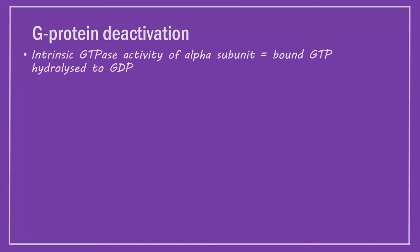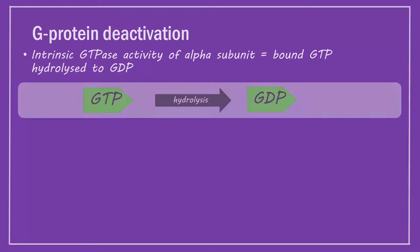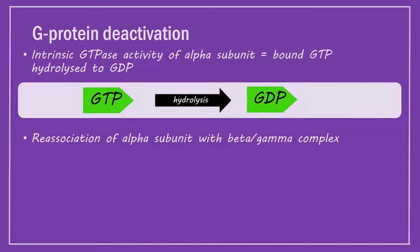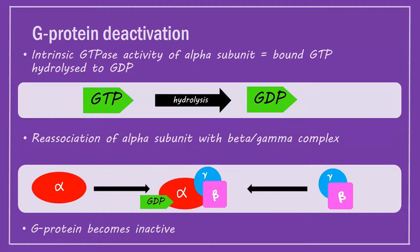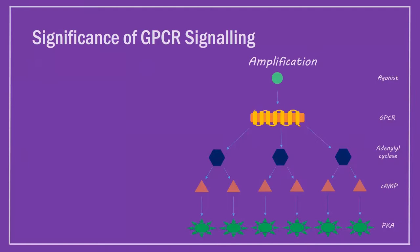G-protein deactivation. Eventually, the intrinsic GTPase activity of the alpha subunit results in the bound GTP becoming hydrolyzed to GDP. When this happens, reassociation of the alpha subunit with the beta-gamma complex occurs and the G-protein becomes inactive. It can later be reactivated if the GPCR binds another agonist.